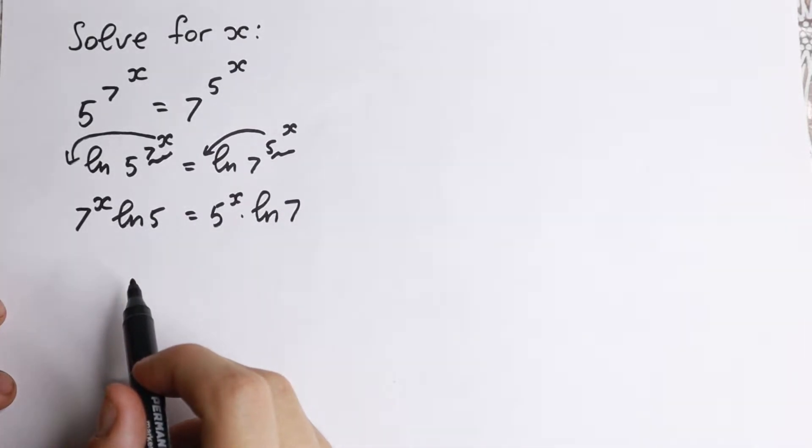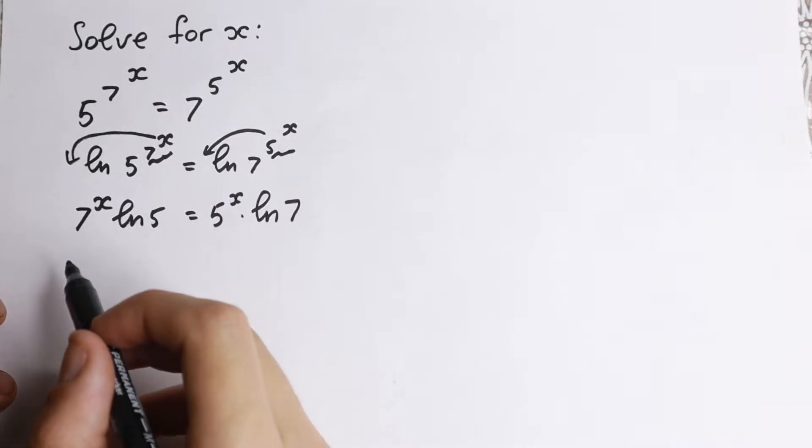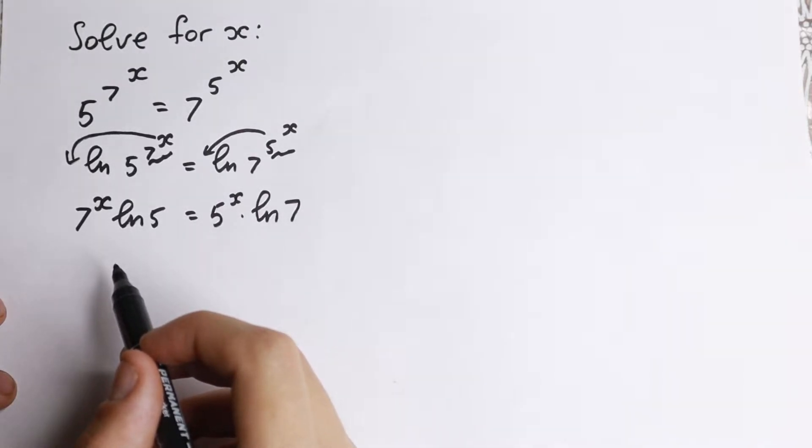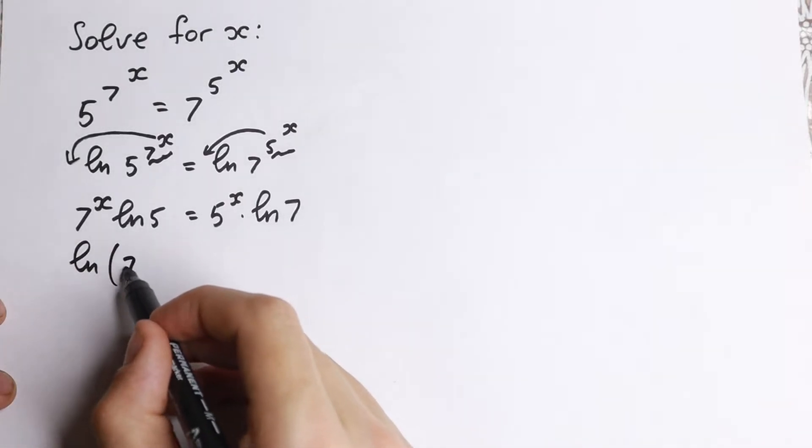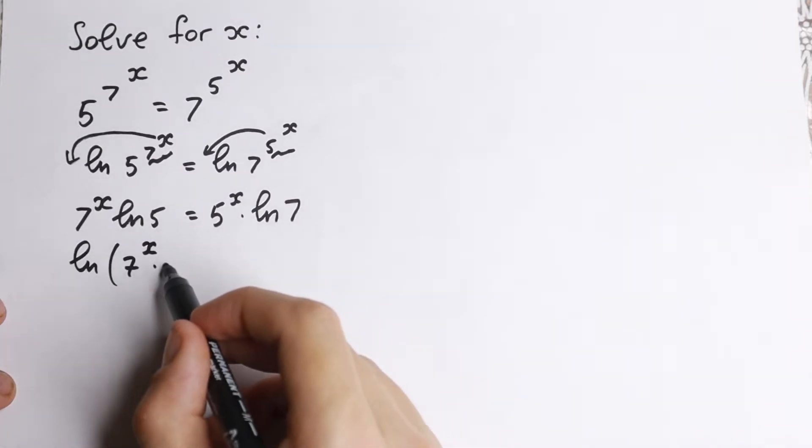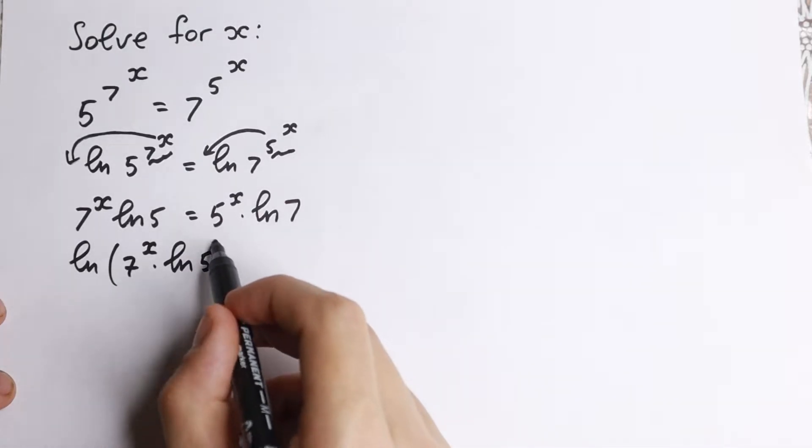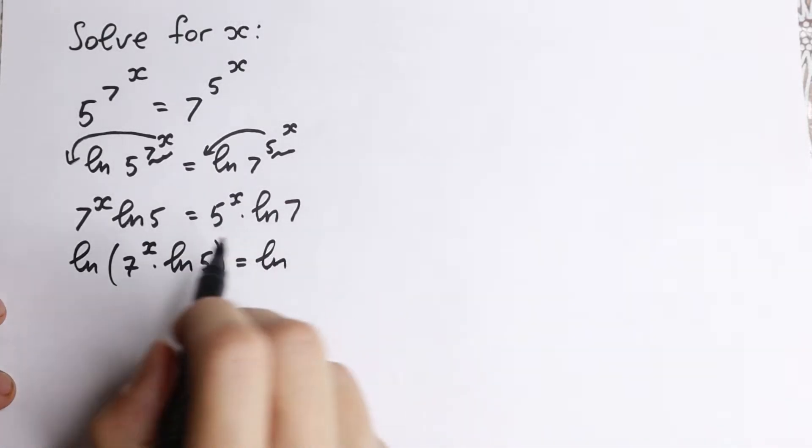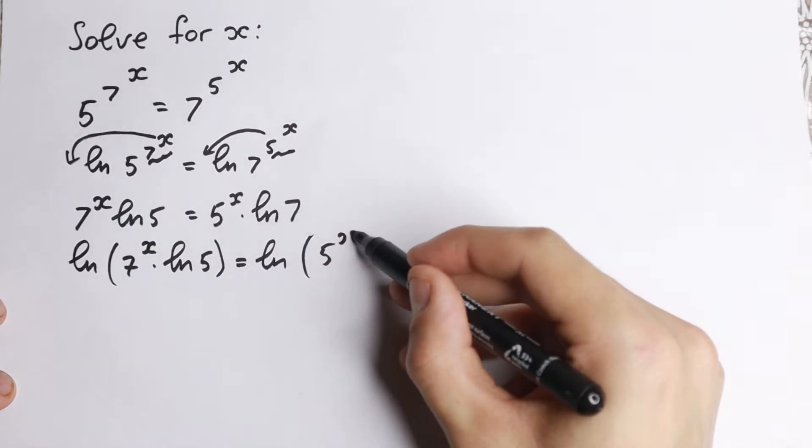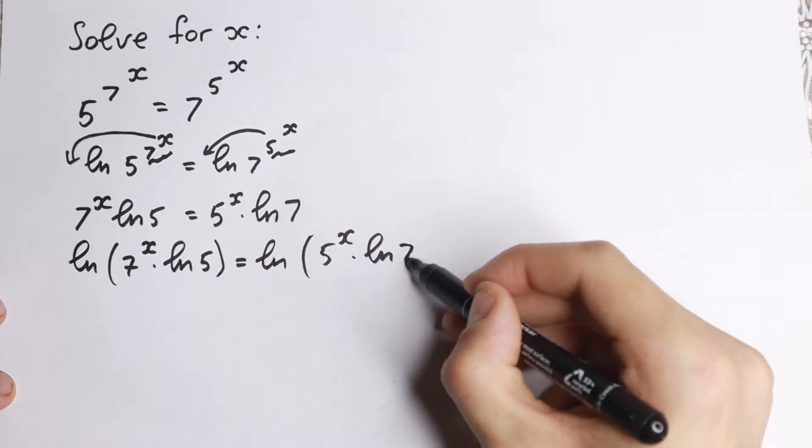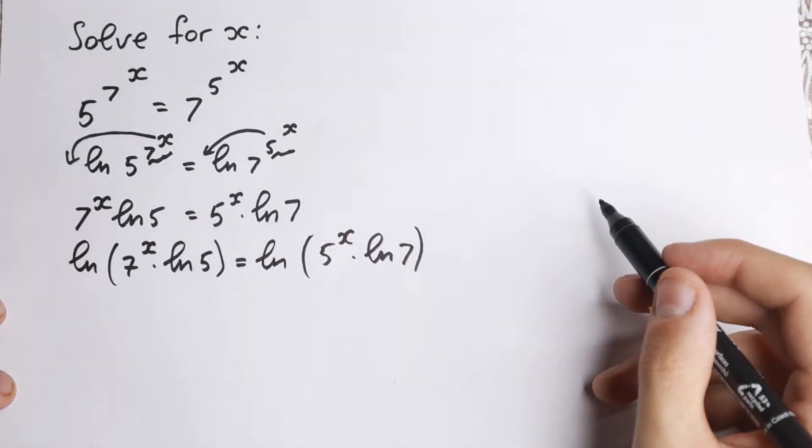What are we going to do next? Let's apply log one more time, because right here we can easily take natural log of this 7 to the x times natural log 5, so from the left-hand side, equal to natural log from the right-hand side, from the 5 to the x times natural log 7.